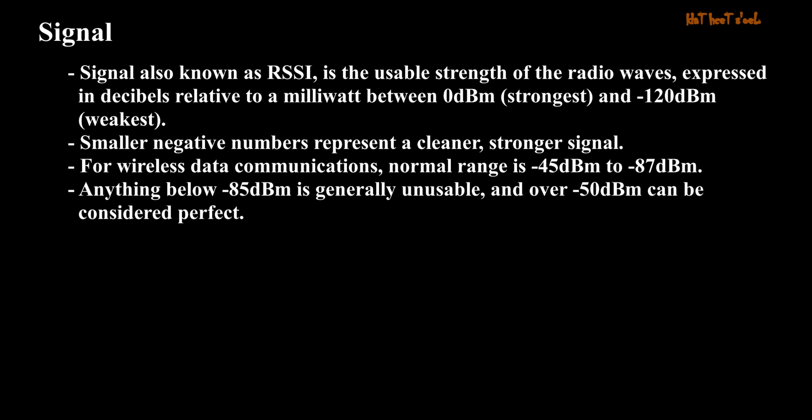Signal, also known as RSSI, is the usable strength of the radio waves, expressed in decibels relative to a milliwatt, between 0 dBm (strongest) and minus 120 dBm (weakest). Smaller negative numbers represent a cleaner, stronger signal. For wireless data communications, the normal range is minus 45 dBm to minus 87 dBm. Anything below minus 85 dBm is generally unusable, and over minus 50 dBm can be considered perfect.